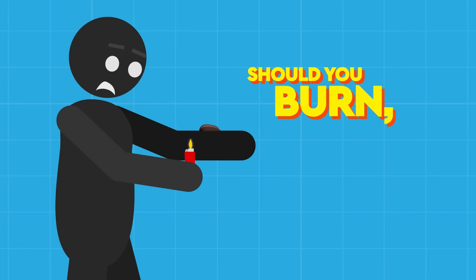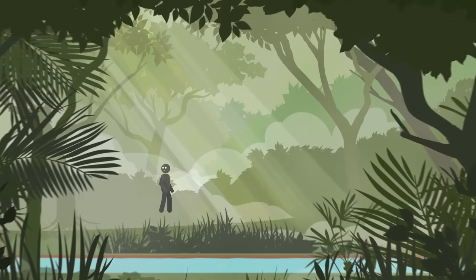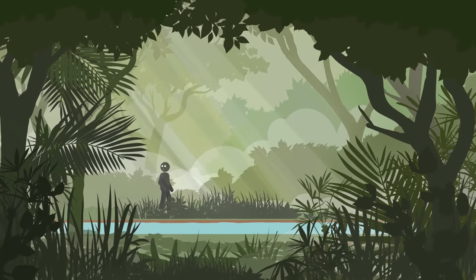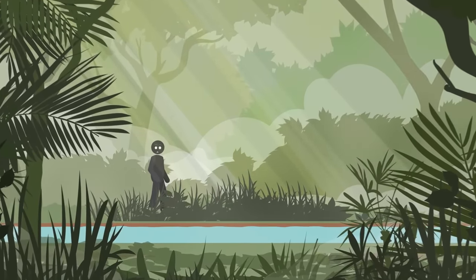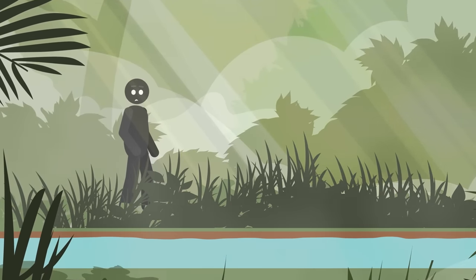Should you burn, salt or rip leeches off? The Rainforest! Lush, green and humid. Here, moisture is so abundant that creatures that need to stay wet to survive can get by on the long grass. Creatures like leeches, for example. Everybody's favourite wriggling, glistening bloodsuckers can be found in and around fresh water the world over.